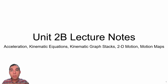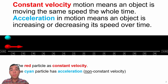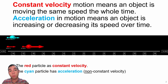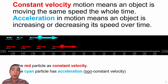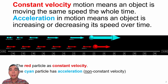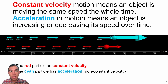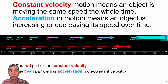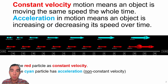In Unit 2B, we're going to continue our conversation about motion by building off of the constant velocity model with a new idea of acceleration. Previously, we talked about constant velocity motion, where an object was moving with the same speed the entire time throughout its motion—it never sped up or slowed down. But now we introduce the idea of acceleration, which is a change in an object's speed.